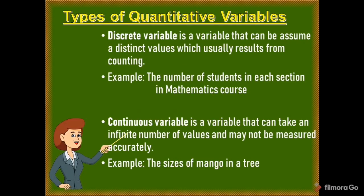Let's proceed to the types of quantitative variables. The first is the discrete variable — a variable that can assume distinct values, usually resulting from counting. For example, the number of students in each section in a mathematics course. The second is the continuous variable — a variable that can take an infinite number of values and may not be measured accurately. An example is the sizes of mangoes in a tree.